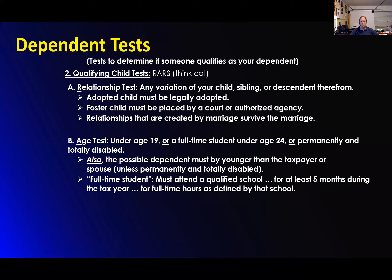Test to determine if someone qualifies as your dependent — the qualifying child test. The relationship test: it has to be a relationship. We have to do the relationship test to start — any variation of your child, sibling, or descendant.